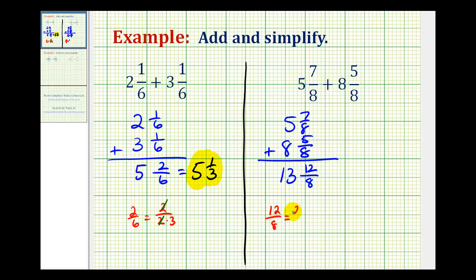The prime factorization of 12 is two times two times three. And the prime factorization of eight is two times two times two. So, notice how the numerator and denominator have two factors of two in common. So, this simplifies to one and this simplifies to one. So, this is equal to 13 and three-halves.